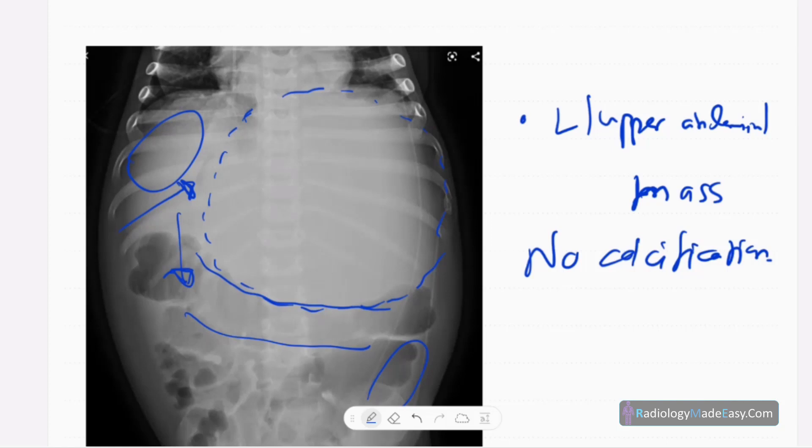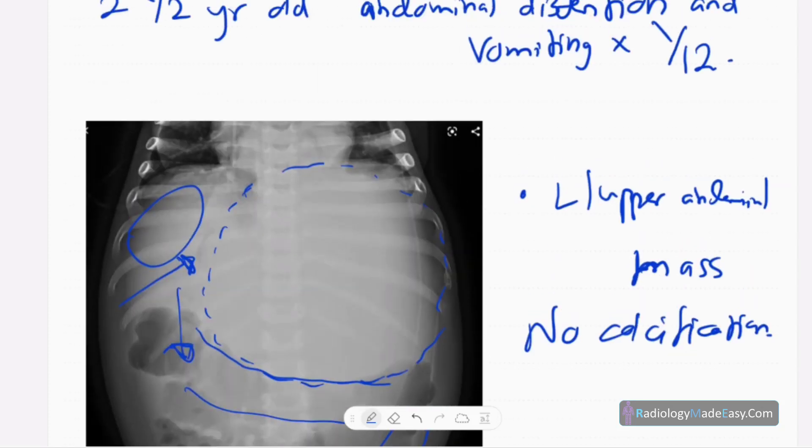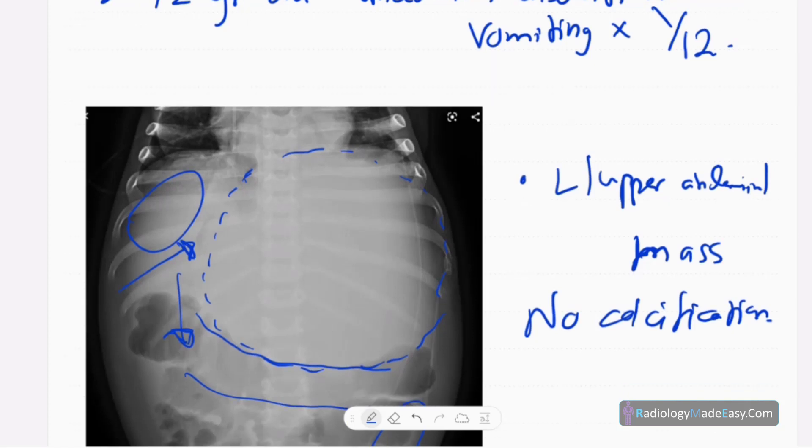And the neuroblastoma occurs mainly in the suprarenal glands, and it can occur in the sympathetic chain, organ of Zuckerkandl, pelvis, then the posterior mediastinum. They are the common sites for neuroblastoma, and it's an aggressive tumor and sometimes it is bilateral. So you have to differentiate neuroblastoma from Wilms tumor. Wilms tumor occurring in the kidney, neuroblastoma occurring in the suprarenal glands.